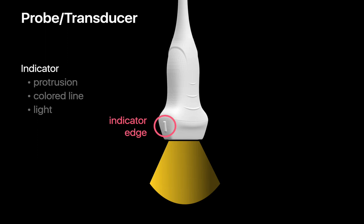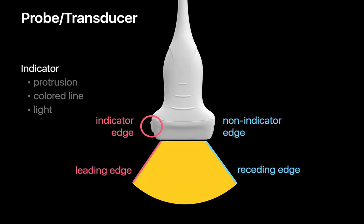The opposite edge of the probe is called the non-indicator edge. The edge of the ultrasound beam on the indicator edge is the beam's leading edge, and the edge of the ultrasound beam on the non-indicator edge is the beam's receding edge.